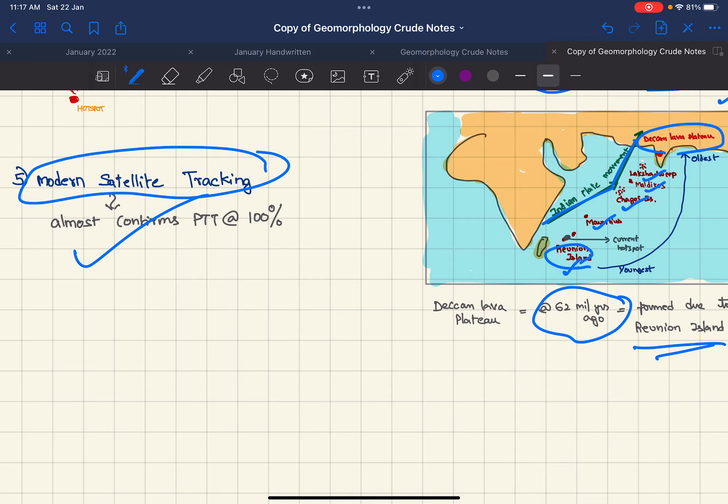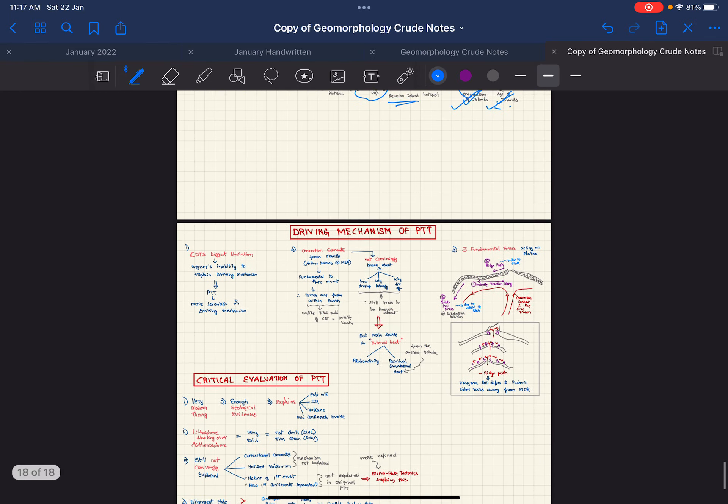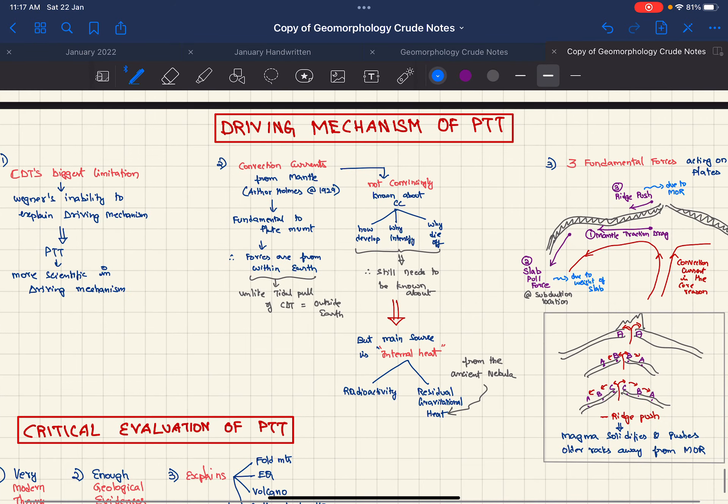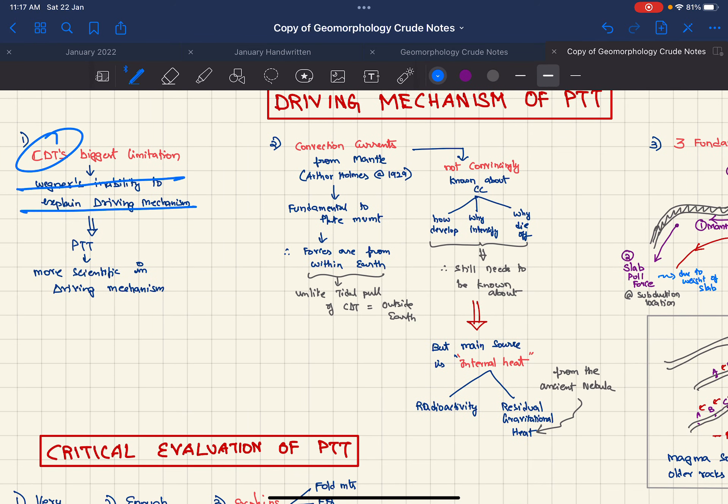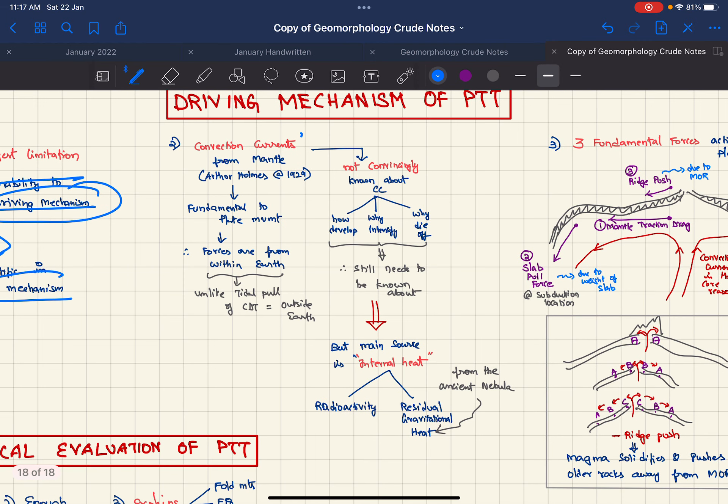Coming to driving mechanism of PTT, the biggest limitation of Wegener was his inability to explain the driving mechanism. PTT on the other hand gives much better scientific explanation of the driving mechanism. The main fundamental cause for the plate movement are the convection currents. This was taken from Arthur Holmes who proposed it in 1929.